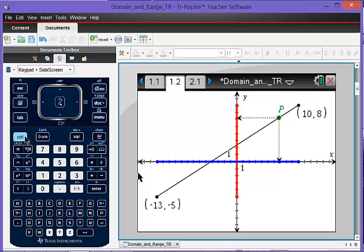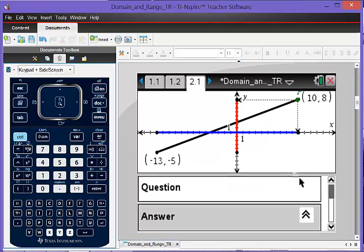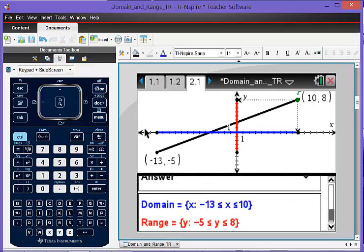And to make sure that they state the domain and range properly, it shows this here. If I click on show the answer, the domain in blue, the range in red, and showing that it is included on the endpoints.